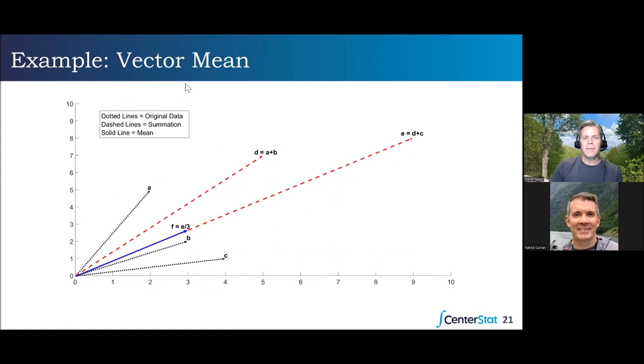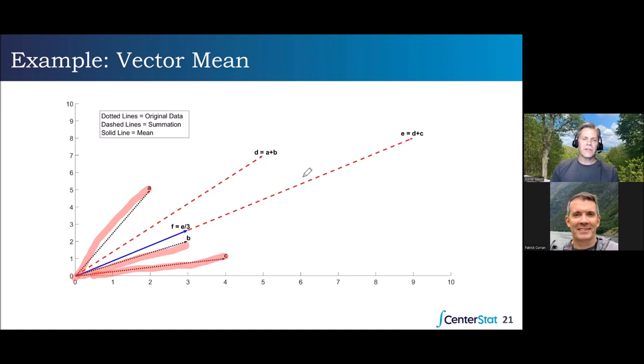We're going to work in two-dimensional space to keep things easy. We've got three different vectors — vector A for person one, vector B for person two, vector C for person three. We add up A and B first, following the parallelogram law, to get D, which equals A plus B. For example, A is about two, five and B is about three, two, giving us five, seven as the point we terminate at when adding those two vectors.